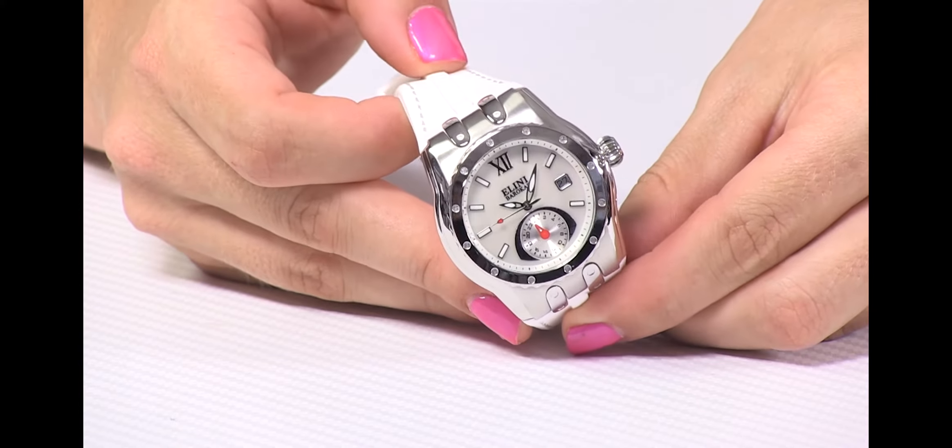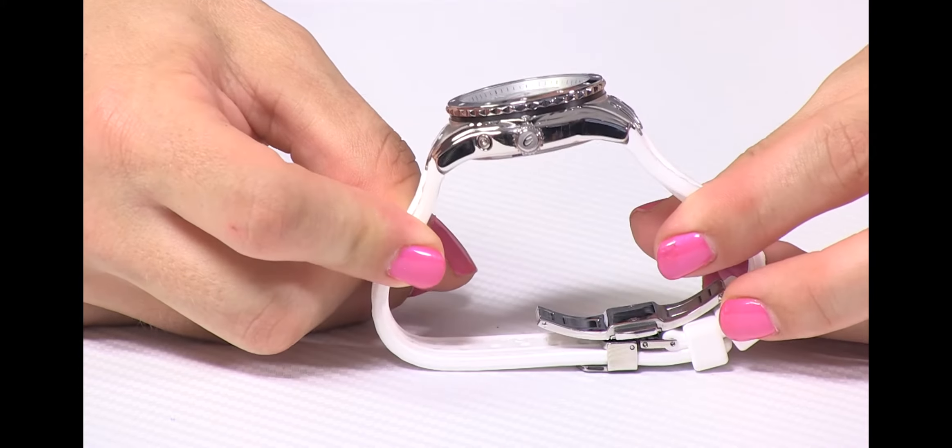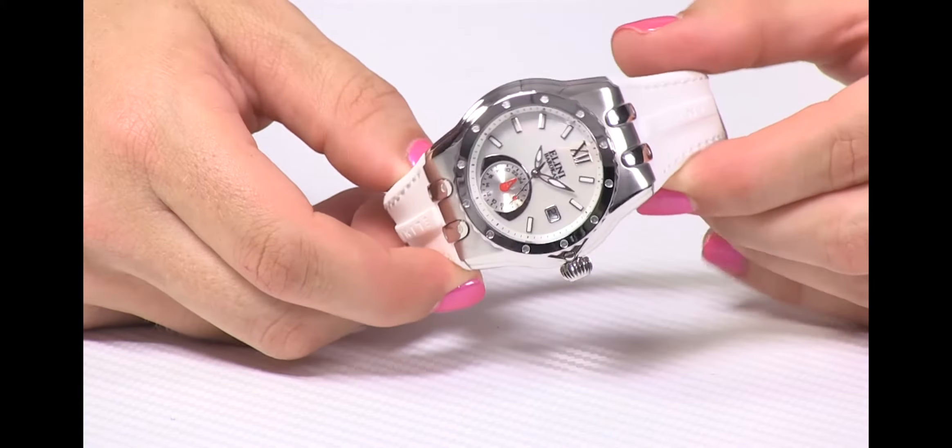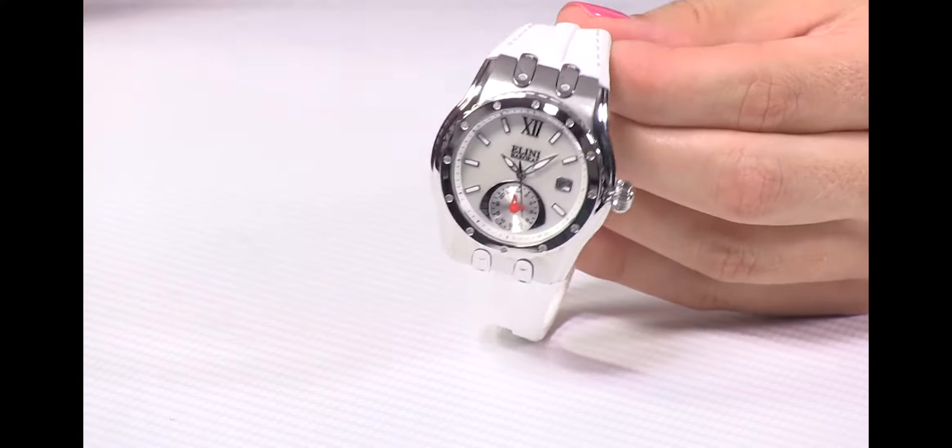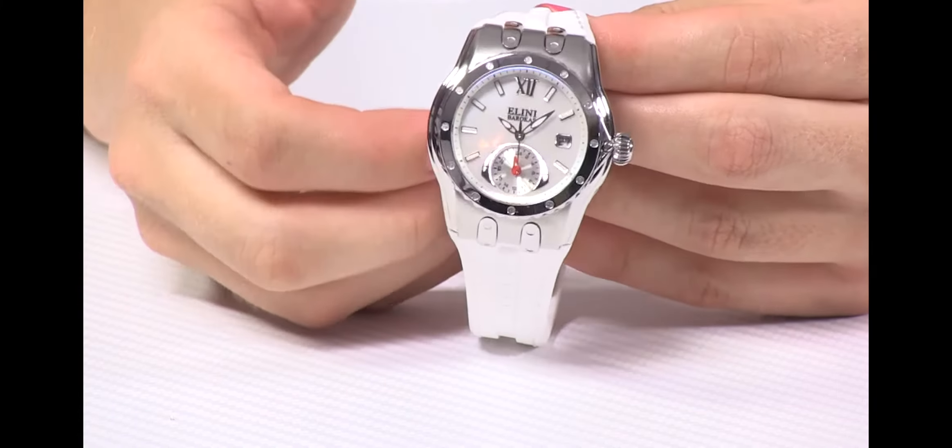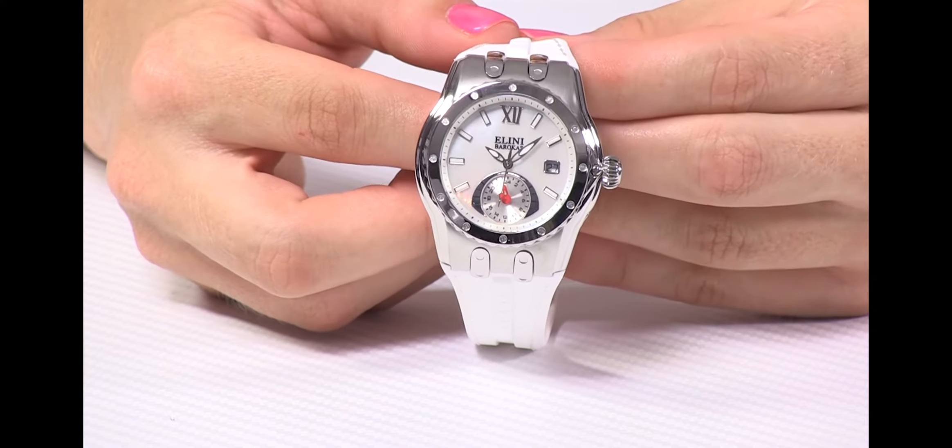It's an AM-PM indicator. This timepiece, in and of itself, is a 200 meter water resistant watch. That means this is the kind of watch you can go swimming and diving with.